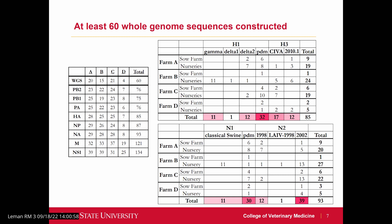There were six HA clades represented, with the most common being the H1 pandemic clade, and five NA clades, with the most common being the N2 2002 clade.